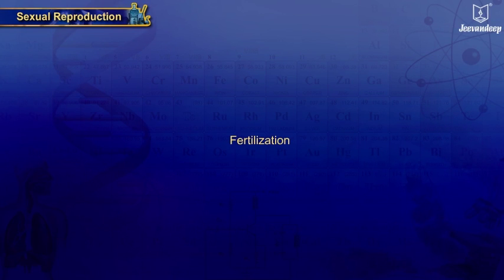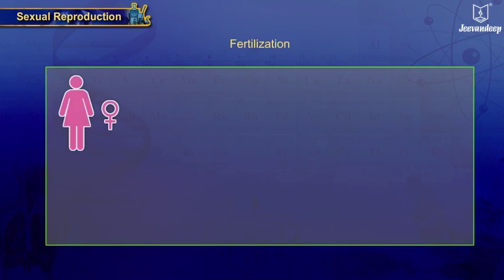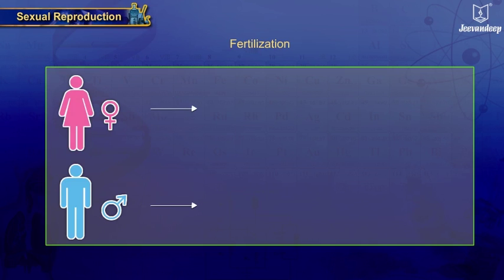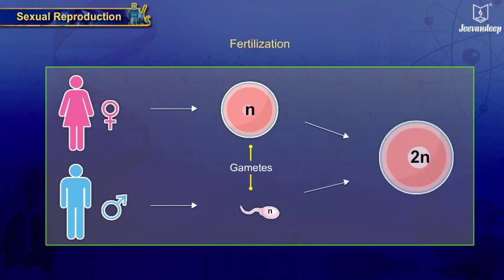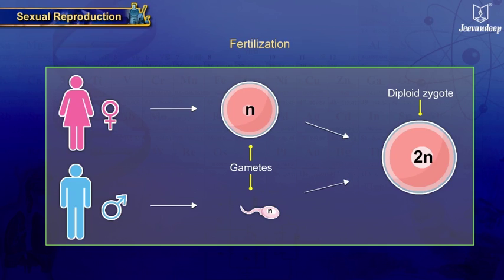Fertilization is the process of fusion of male and female gametes to form the diploid zygote.